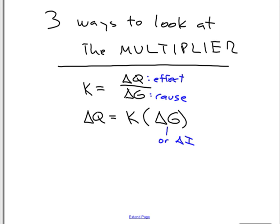The effect of an increase in government spending or investment spending is to raise real output by something more than the original increase in government spending or investment.